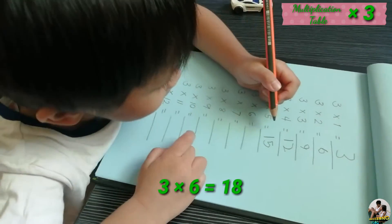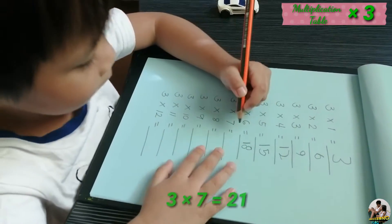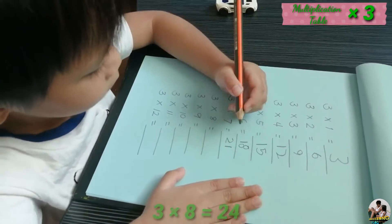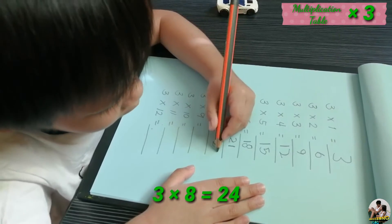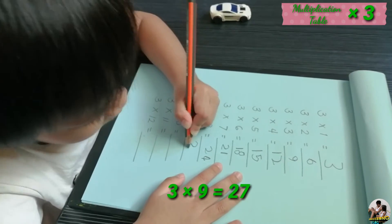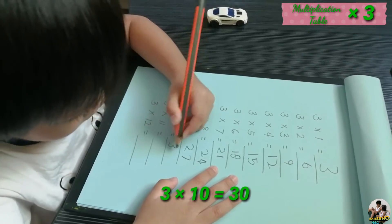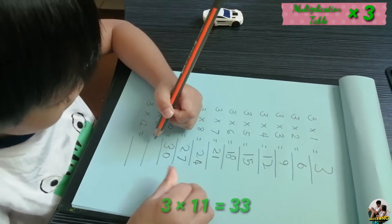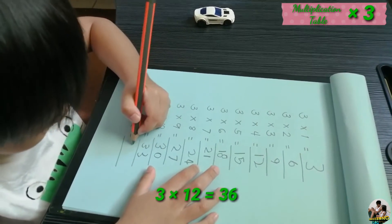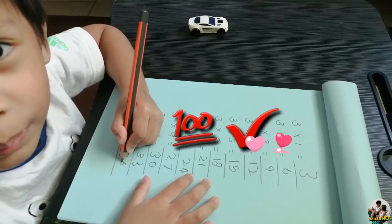Three times six equals eighteen. Three times seven equals twenty-one. And three times eight equals twenty-four. Three times nine equals twenty-seven. And three times ten equals thirty. Three times eleven equals thirty-three. Three times twelve equals thirty-six. Good job!